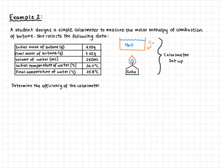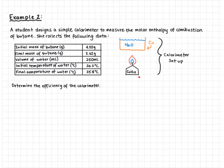Our next example is a little more involved. Rather than being given the experimental enthalpy, we're going to calculate it using calorimetry data. A student designs a simple calorimeter to measure the molar enthalpy of combustion of butane. The data collected: initial mass of butane 4.5 g, final mass of butane 3.62 g, volume of water in the calorimeter 250 mL, initial temperature of water 20.2°C, and final temperature of water 25.8°C. We have an open flame of butane — an open system — underneath a conductive container holding 250 mL of water.